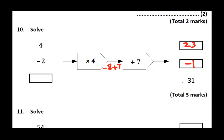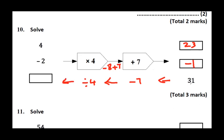Third part: the output is given and we have to do the inverse operation. Going backwards, the inverse of plus 7 is subtract 7, and the inverse of times by 4 is divided by 4. So if the output is 31, subtract 7 gives 24. 24 divided by 4 gives 6.